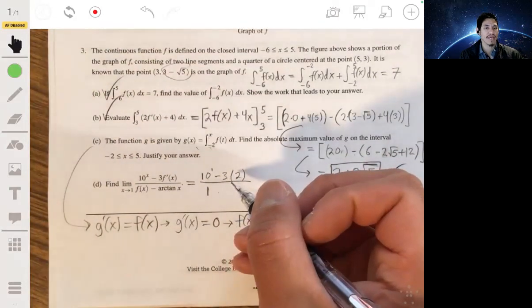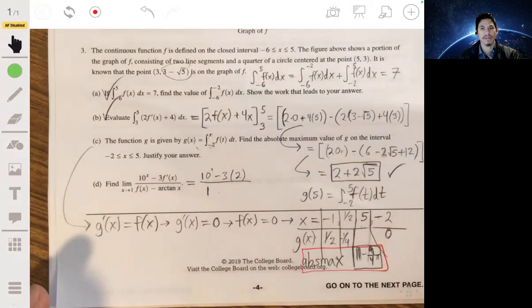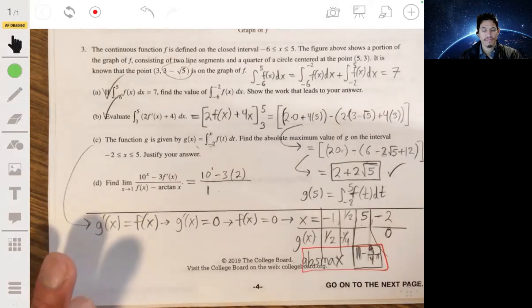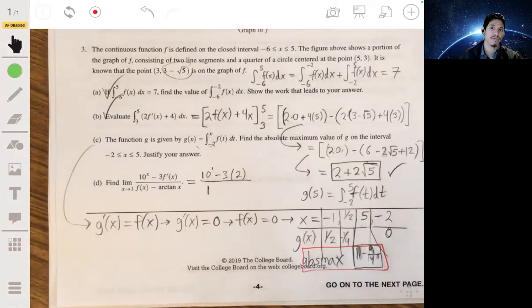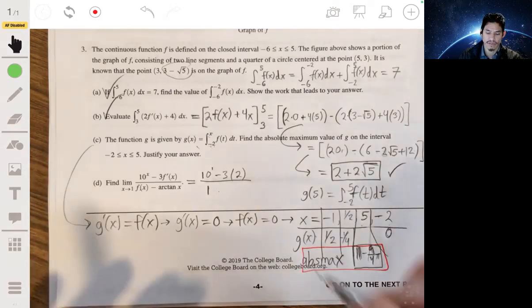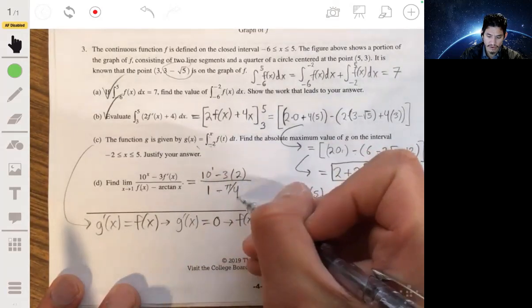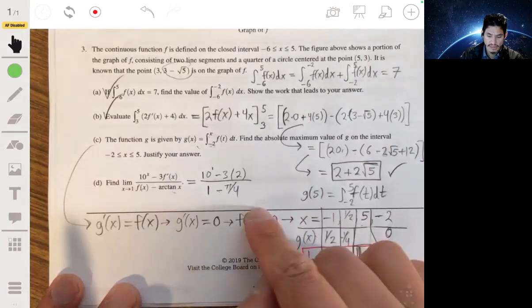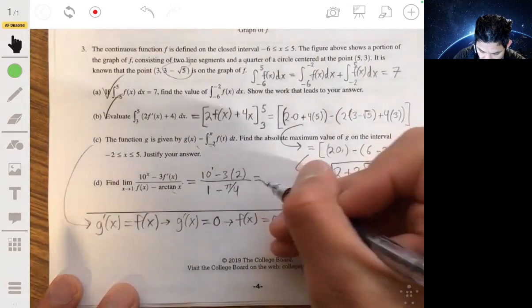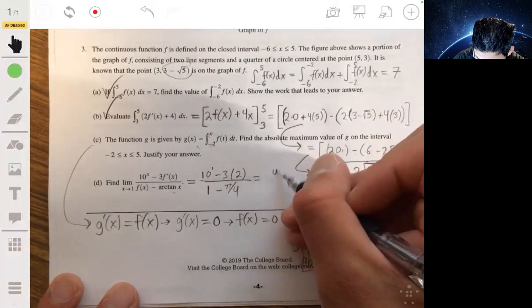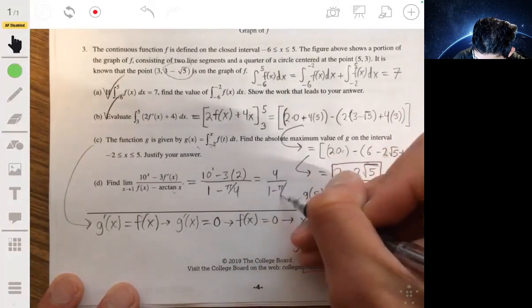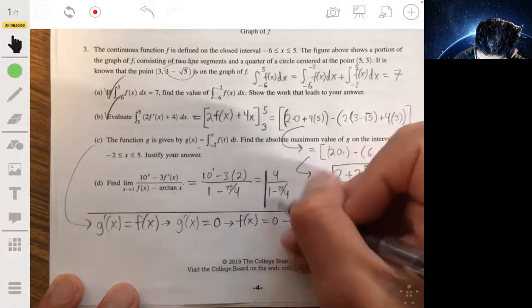So remember your trig: what angle do you have the sine and cosine functions the same? Now, there's two possible angles. It would be π/4 and 5π/4. But remember, the domain is restricted to negative π/2 and π/2. So this is just π/4. And then your answer is just really this. You can simplify it: 10 minus 6, so 4 over (1 - π/4). But it's a non-calculator, so you just leave it like this.